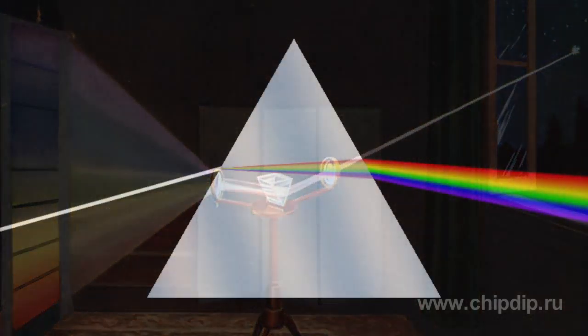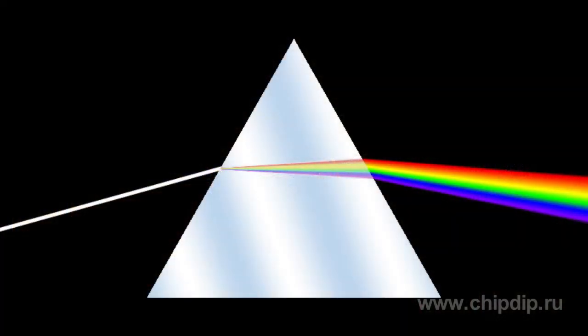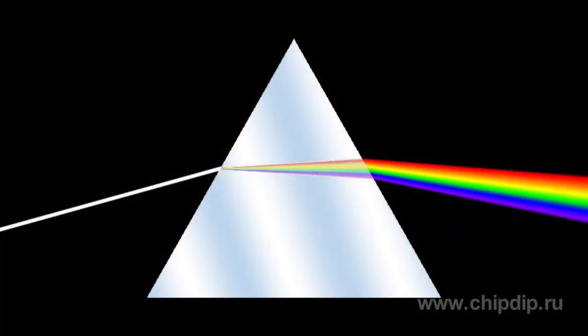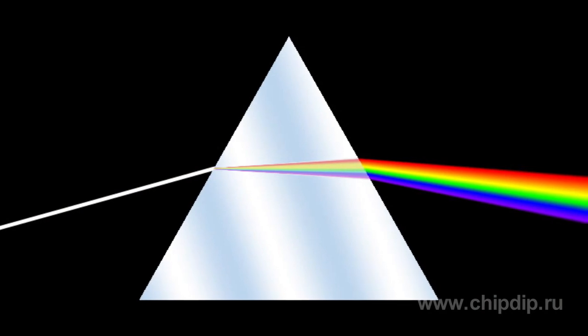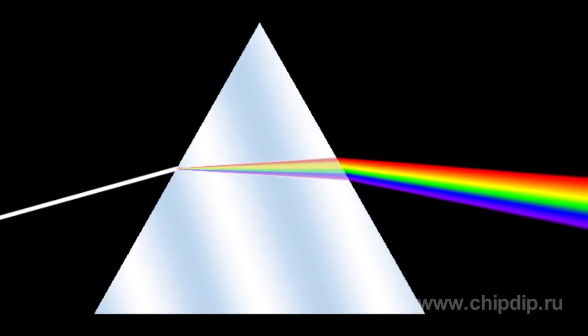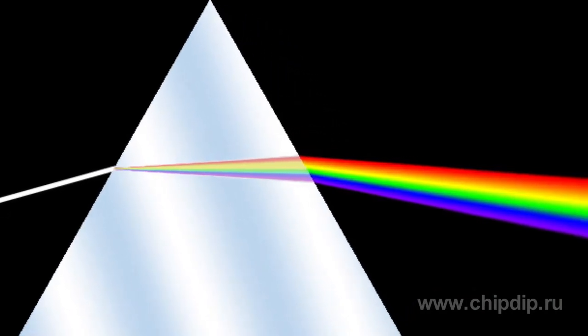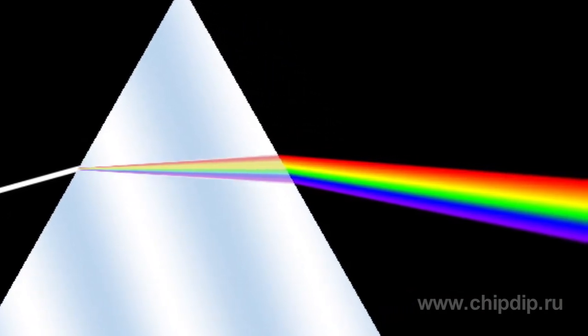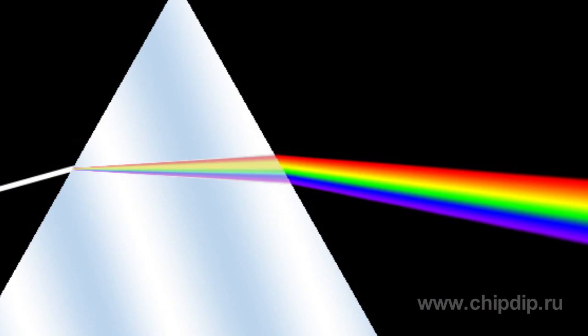Newton proved that if white light passes through a glass prism, it will decompose into seven rainbow colors: red, orange, yellow, green, blue, indigo, and violet. This means that white light is not actually white — vice versa, it includes all the above colors.